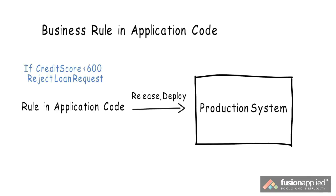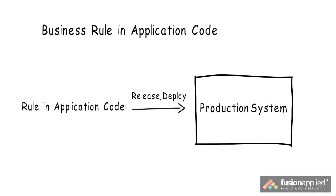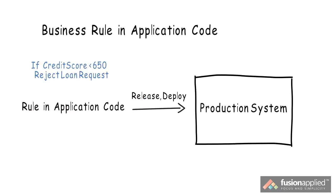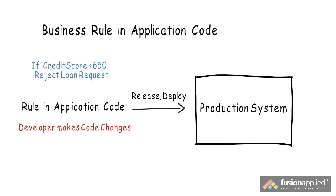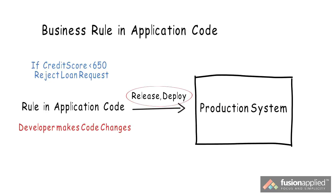But business rules can change based on a variety of business factors. So let's say the business changes the credit score threshold to 650. Now a developer will have to make code changes in the application and go through the build, release, and deploy process again before the change is effective. So there's a considerable effort involved in making rule changes in the application.